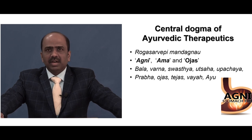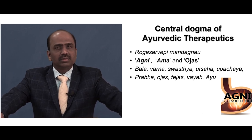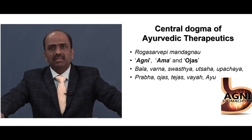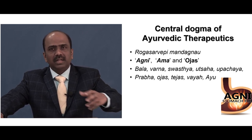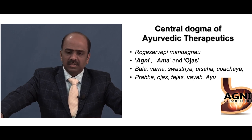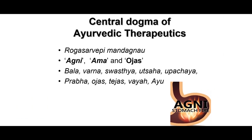Coming to another fundamental principle of Ayurvedic Therapeutics: Agni. We call Agni the central dogma of Ayurvedic therapeutics. The benefits and effects of the proper maintenance of Agni are Bala, Varnya, Swasthya, Utsaha, Upachaya, Prabha, Ojas, Tejasvaya, and Ayyuhu. All these are dependent on the proper functioning of Agni.